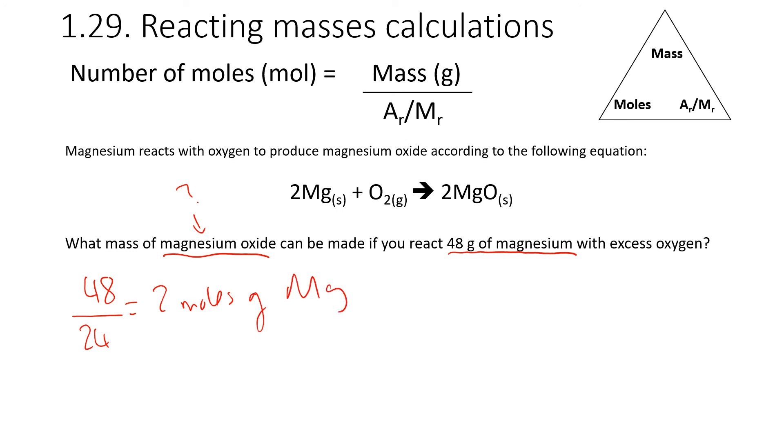Step three, look at the ratios. Because we have a big two here and a big two here, the ratio between magnesium and magnesium oxide is two to two. We can therefore say that we also have two moles of magnesium oxide produced. Now we do our final calculation. The mass of MgO equals two multiplied by 40, which is the molecular mass of magnesium oxide, which gives us 80 grams.